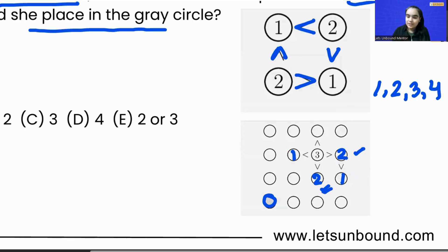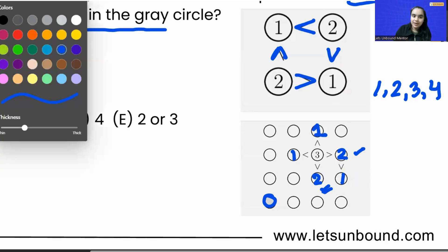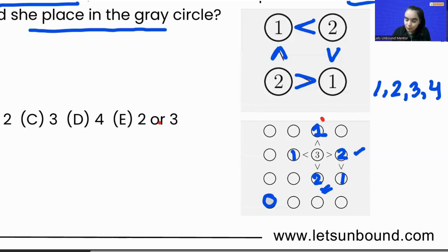So now what we can do is we can say 1 can come over here, right? Now from here, what we can see: 1 is in the first row, in the second row, and in the third row, right? So the only place which is left for 1 is the gray circle, right, because if we see this 1, we cannot have any other 1 in this row and in this column, correct?